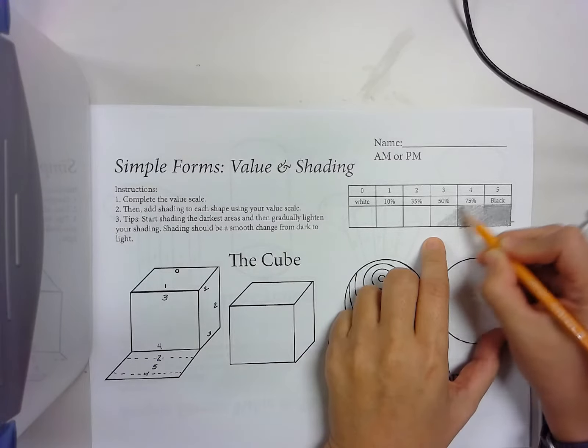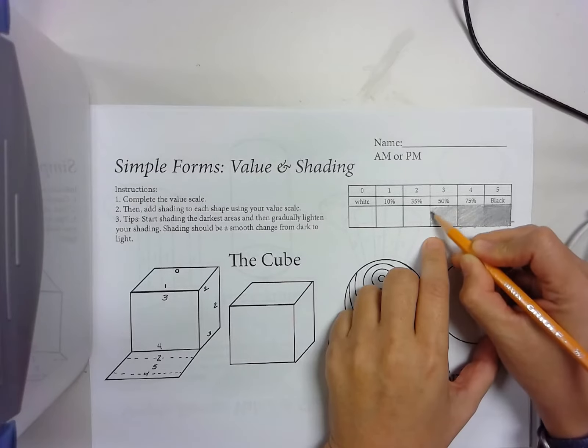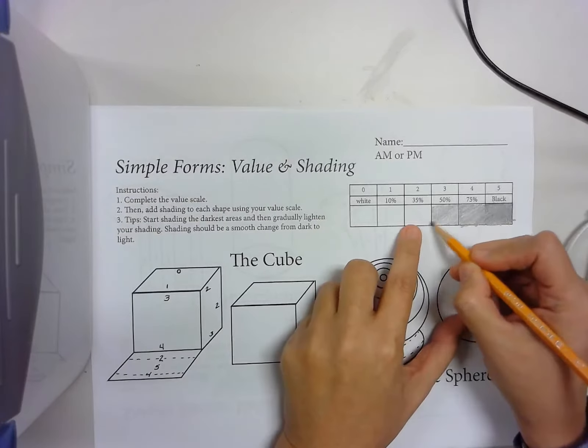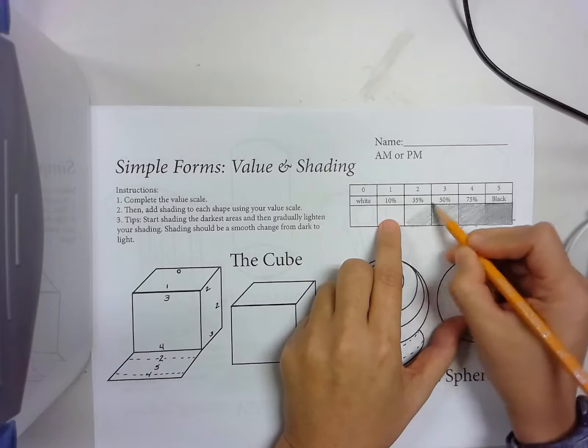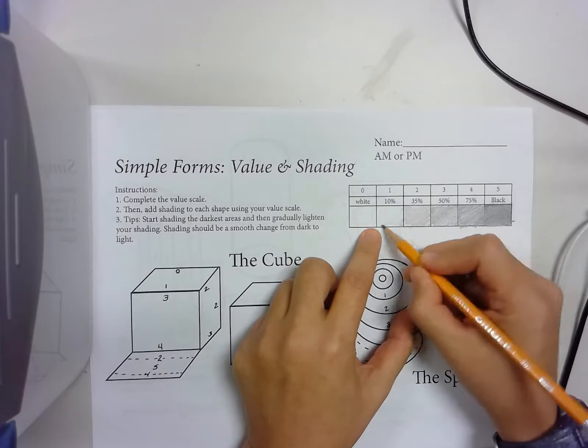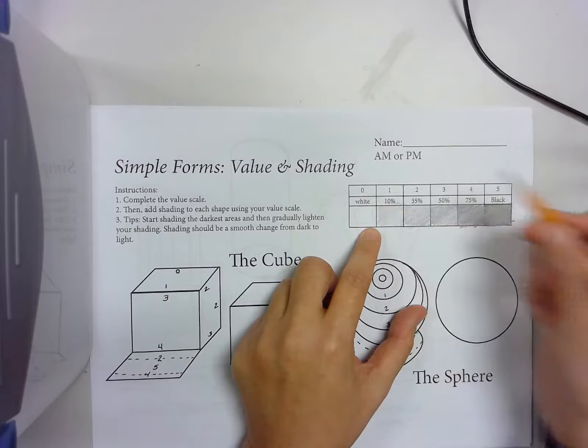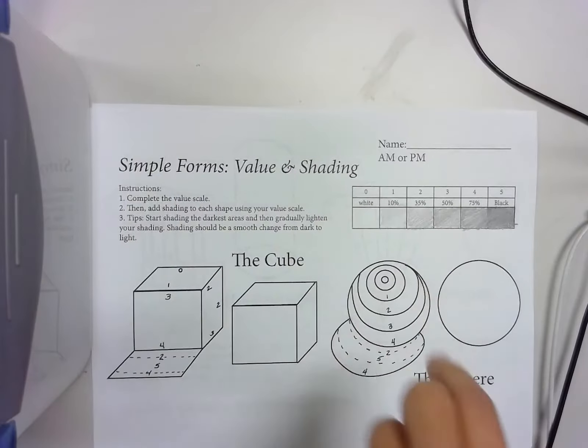Then I go maybe half the amount of pressure here for 3. For 2, I'm even doing less pressure. For 10, I'm really just 10% pressure. Then it goes to white, and so you have a value scale here.